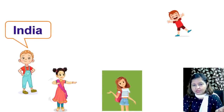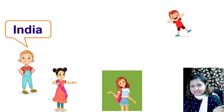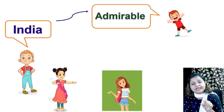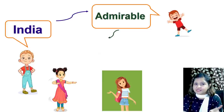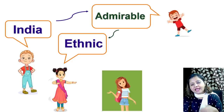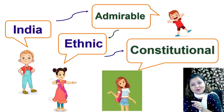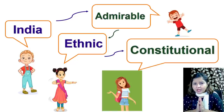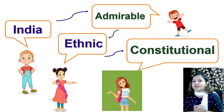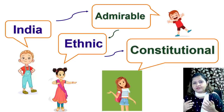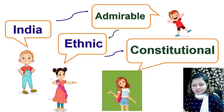For older children, the first student says 'India,' the second says a word related to India or Independence Day starting with the last letter of the previous word. For example: India → Admirable (ending in E) → Ethnic (ending in C) → Constitutional → Liberty, and so on. For younger children, they can simply say any word that comes to mind when they hear 'India' — patriotism, a song, ethnic, incredible — irrespective of the ending letter.